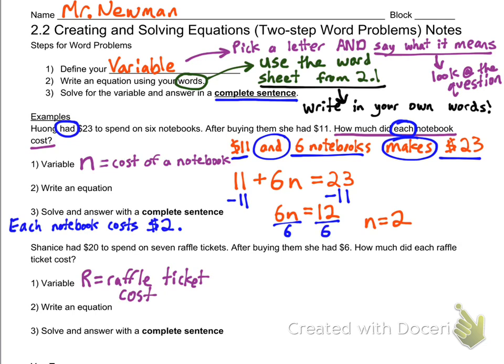In this case, Shanice has $20 to spend on seven raffle tickets. After buying them she has $6. How much did each raffle ticket cost? If R is the cost of the raffle ticket, then I want to circle my keywords: had, after buying, each. $20 is what she had, so we're going to start with that.